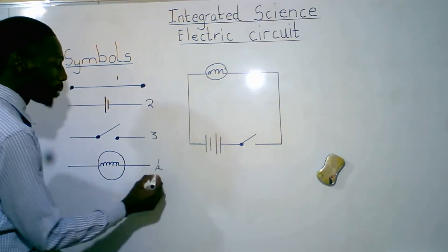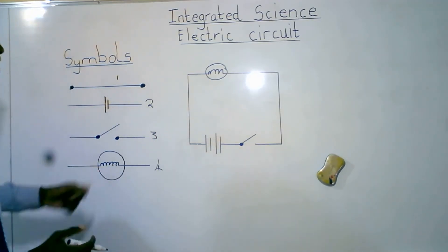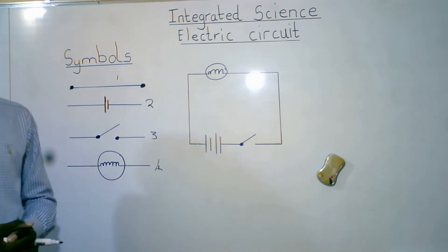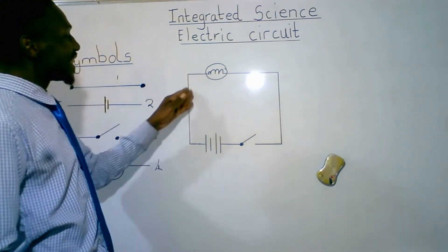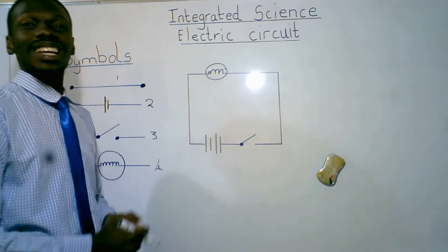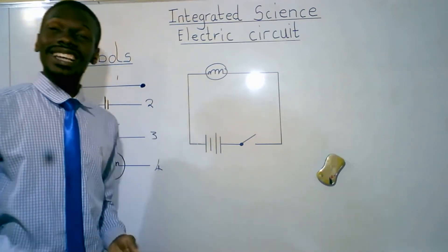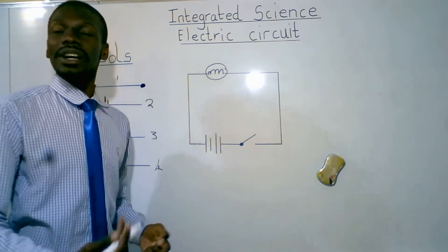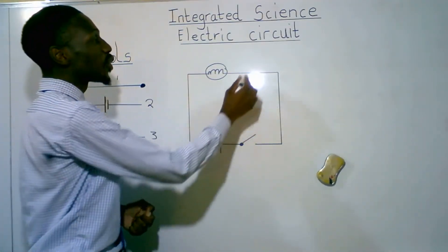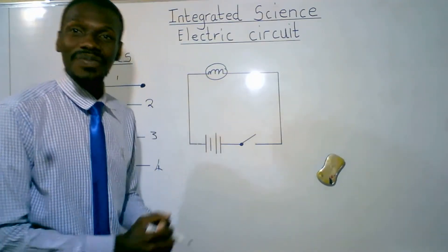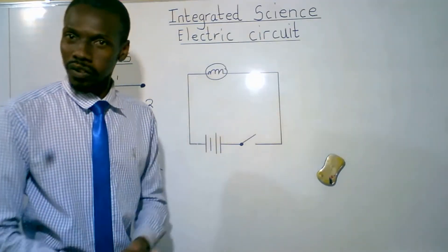Apart from a switch, we've got a power. This is what we call a power — this is the symbol for the power. Now let's take a look at our simple circuit. This is how a simple circuit looks like. When they ask us to mention parts of a simple circuit, we're going to say we've got a connecting wire in which current flows.